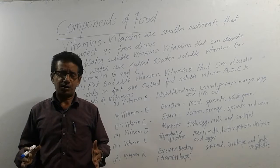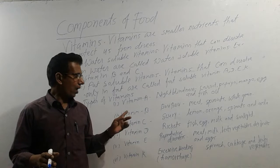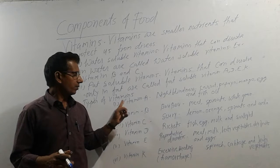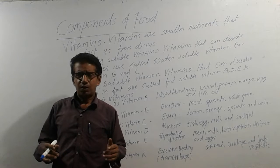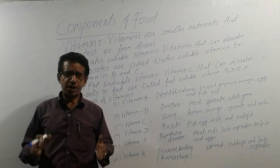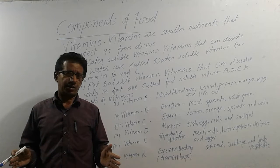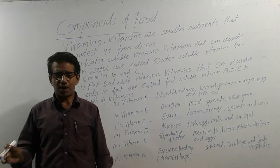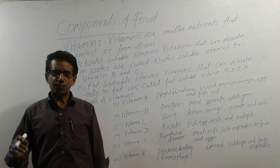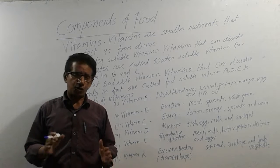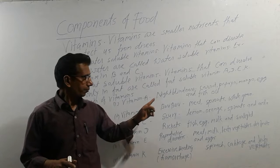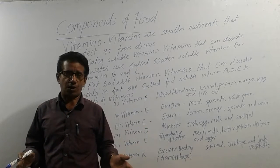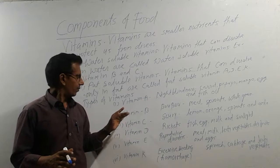Now we have to study the types of vitamins on the basis of functions. The first one is vitamin A. The vitamin that protects us from night blindness is called vitamin A. That means the disease caused by the deficiency of vitamin A is called night blindness. The sources of vitamin A are carrot, papaya, mango, eggs, and fish oil.